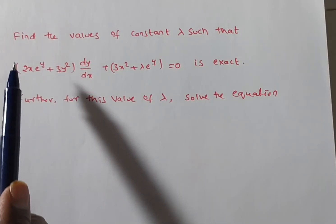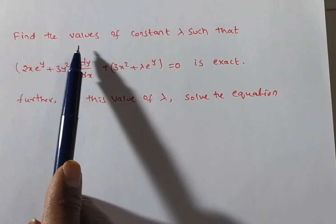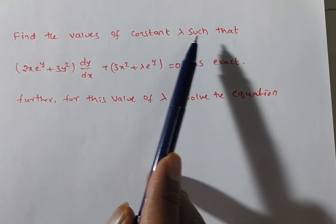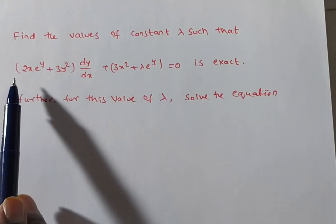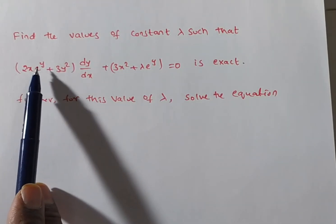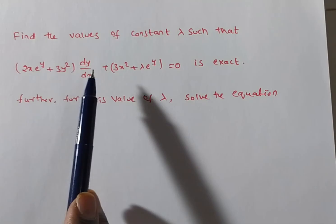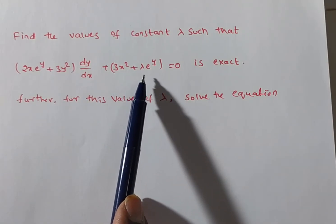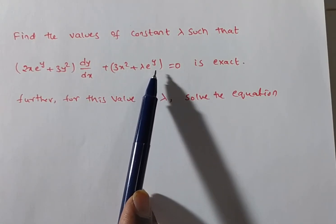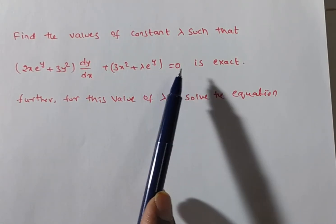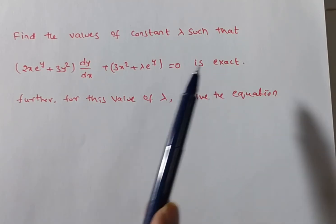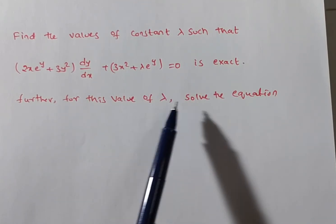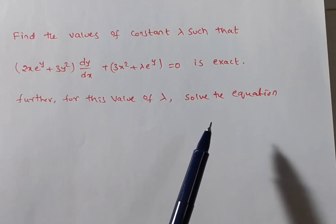The given problem is: find the values of constant lambda such that (2x·e^y + 3y²)dy/dx + 3x² + λ·e^y = 0 is exact. Further, for this value of lambda, solve the equation.